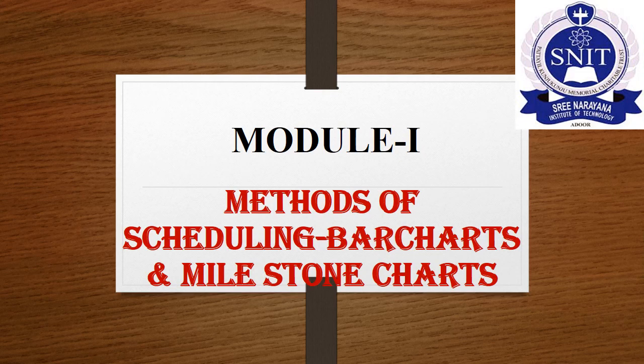Today our topic of discussion is Methods of Scheduling. We know that there are different methods of scheduling used in construction project management. They are Bar Charts, Milestone Charts and Network Analysis including Critical Path Method and Program Evaluation and Review Technique PERT. So today in this session we are discussing about Bar Charts and Milestone Charts.